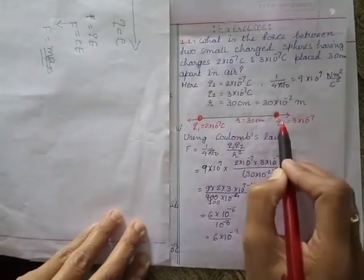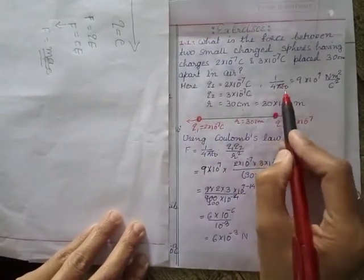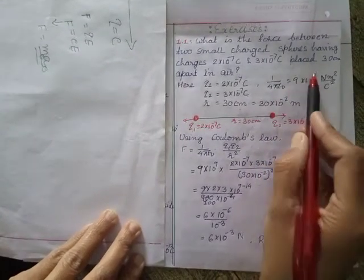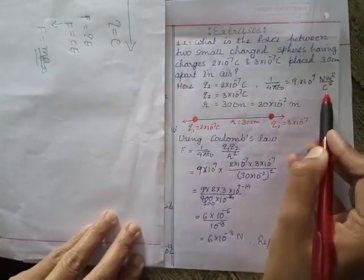I need the value of 1/(4πε₀). I have written here 9×10⁹ meter square per coulomb square. You should remember, even if not given, this we should know by heart.